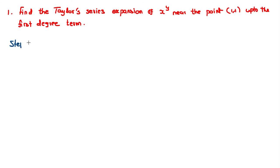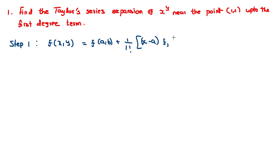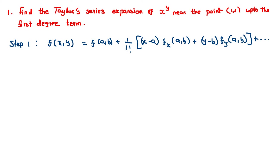Step 1 — the formula. The Taylor series f(x,y) is equal to f(a,b), plus 1 by 1 factorial into (x minus a) into fx of (a,b), plus (y minus b) into fy of (a,b), plus etc. Since the question asks for only the first degree term, we need f(a,b), fx(a,b), and fy(a,b).